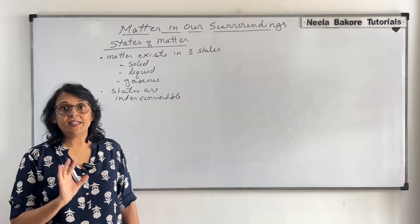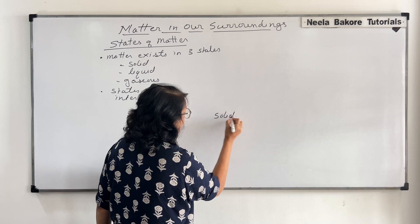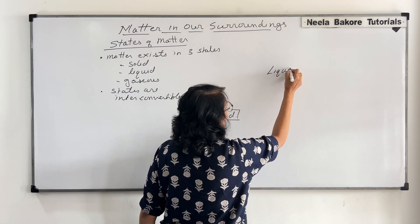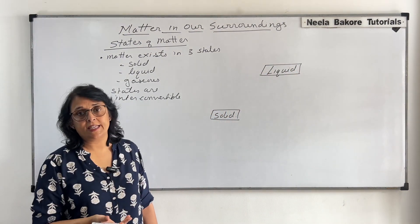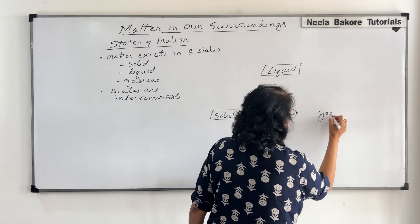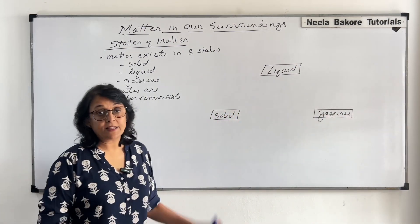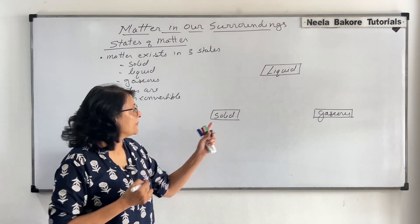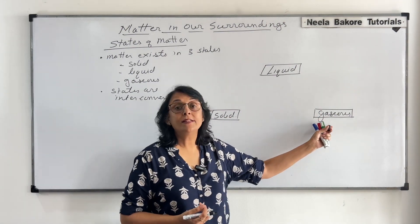Let us see how these three states change into each other. Suppose we write solid here, then this is the liquid state. It will be easier to understand with an example — we can take the example of water. So solid is ice, this is your liquid water, and this is water vapor.